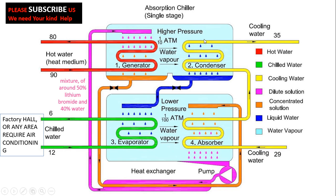In the condenser, there is a cooling coil connected to a cooling tower. When the water vapors strike this coil, they condense back into liquid form. In an absorption chiller, water acts as the refrigerant — so we have now successfully separated the lithium bromide from the water.